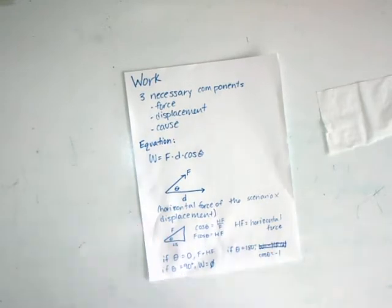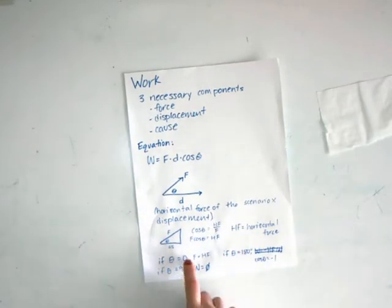So we see that if theta is zero, the force equals the horizontal force, so the work is just force times displacement. If theta is equal to 90 degrees, work is equal to zero because cosine of 90 degrees is zero.